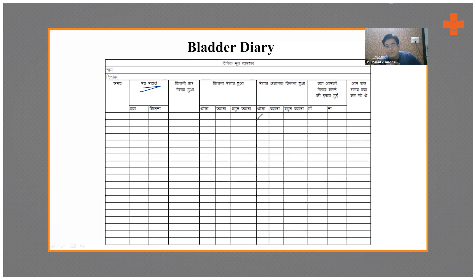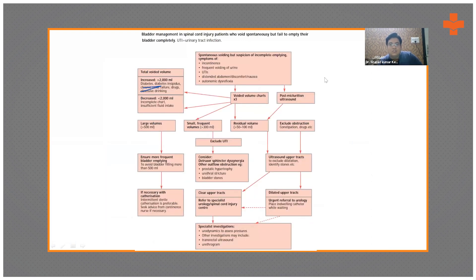The bladder diary also helps plan the frequency of clean intermittent catheterization. For example, if a patient is able to pass urine but is not able to completely empty the bladder, we need to address that.